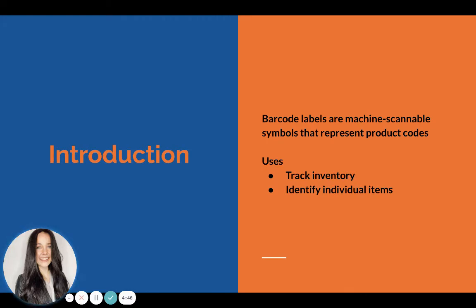A quick introduction: barcode labels are the machine-scannable symbols that represent product codes. You can use barcodes to both track inventory and identify individual products. An associate or yourself scans products, and your inventory through your point of sale system is automatically updating, letting you know how levels are changing and how a product is performing. You can also scan a barcode to pull up an individual product page with sizing information, a product description, and other details.